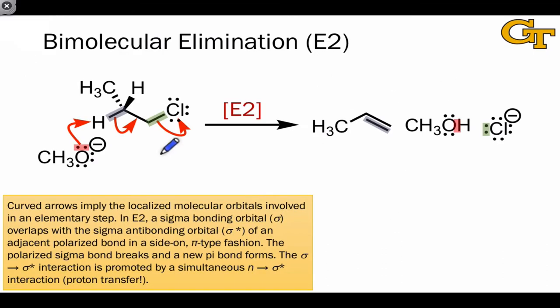Bimolecular elimination is a rather complicated elementary step that involves two simultaneous orbital interactions. But the first thing I want to point out about this step, which is also called E2, is that it's similar in spirit to beta elimination.